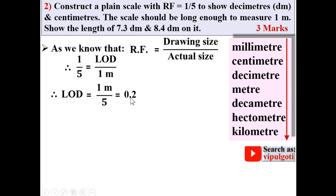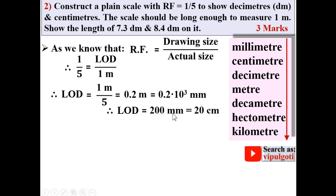Simplifying 1/5 gives 0.2 meter. Converting to mm: 0.2 × 10³ = 200 mm. Converting to centimeters: divide by 10, giving 20 centimeters. So the length of drawing (LOD) is 200 mm or 20 centimeters.